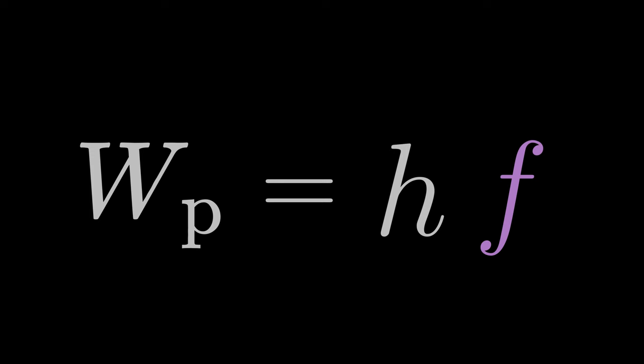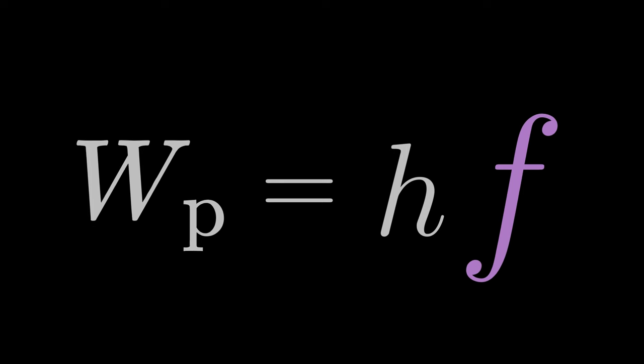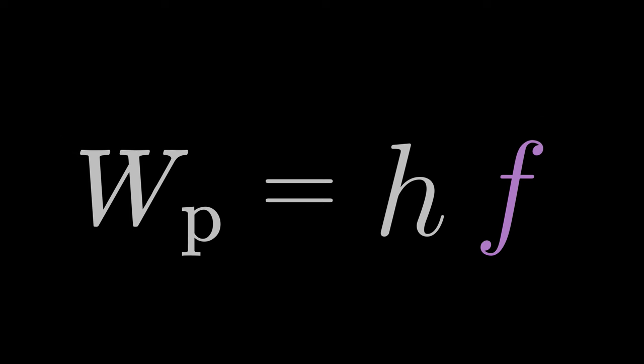The energy of a photon is equal to Planck's constant times the frequency of light. From this, we can conclude that the higher the light frequency, the higher the photon energy. We therefore expect visible light to have less energy than x-rays, for example.